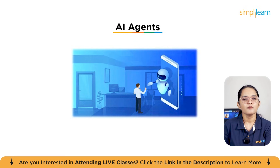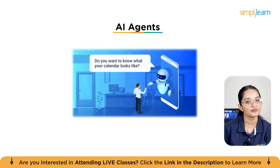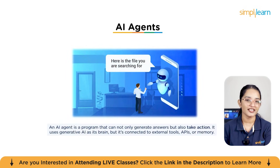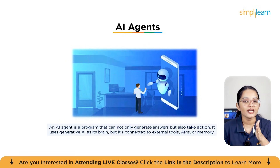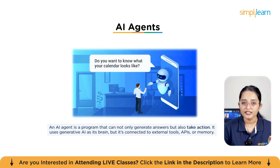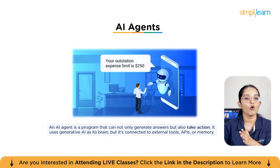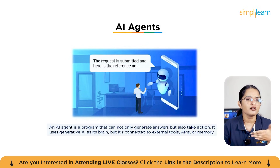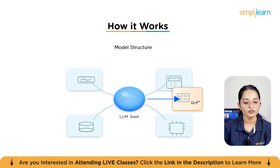Now let's talk about AI agents. Generative AI is just like a brain that writes, but what if we gave that brain some hands and tools? That's where AI agents come in. An AI agent is a program that can not only generate answers but also take action. It uses generative AI as its brain, but it's connected to external tools, APIs, or memory. So instead of just answering your question, it can perform a specific task for you.